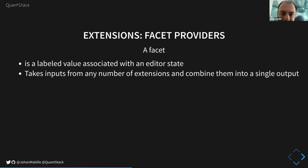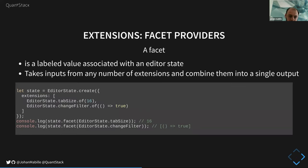A facet is the most basic thing for configuration. It's a labeled value associated with a state — it takes inputs from any number of extensions and combines them into a single output. For instance, here I'm creating a state with an extension for the tab size and an extension for a change filter. Then I can retrieve the state's facet value by calling the facet function and naming the facet I want.